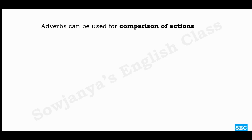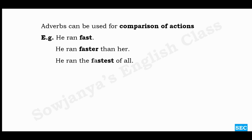Adverbs can be used for comparison of actions. For example: 'He ran fast.' 'He ran faster than her.' 'He ran the fastest of all.' In 'he ran fast,' no comparison is being made — we are simply modifying the verb. 'He ran faster than her' — here his running is compared to her running, comparison is made between two.